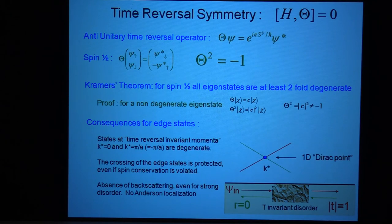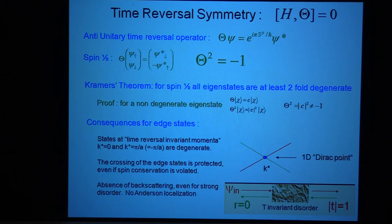Let me say a few words about time reversal symmetry because this is really important. Time reversal symmetry is not your usual kind of symmetry that you learn about in beginning quantum mechanics. Usually you think a symmetry is a unitary operator, but time reversal symmetry is an operator which, in addition to doing some unitary operation, takes the complex conjugate of the wave function. So it's an anti-unitary operator. It does two things: it takes the complex conjugate of the wave function and it also flips the spins.